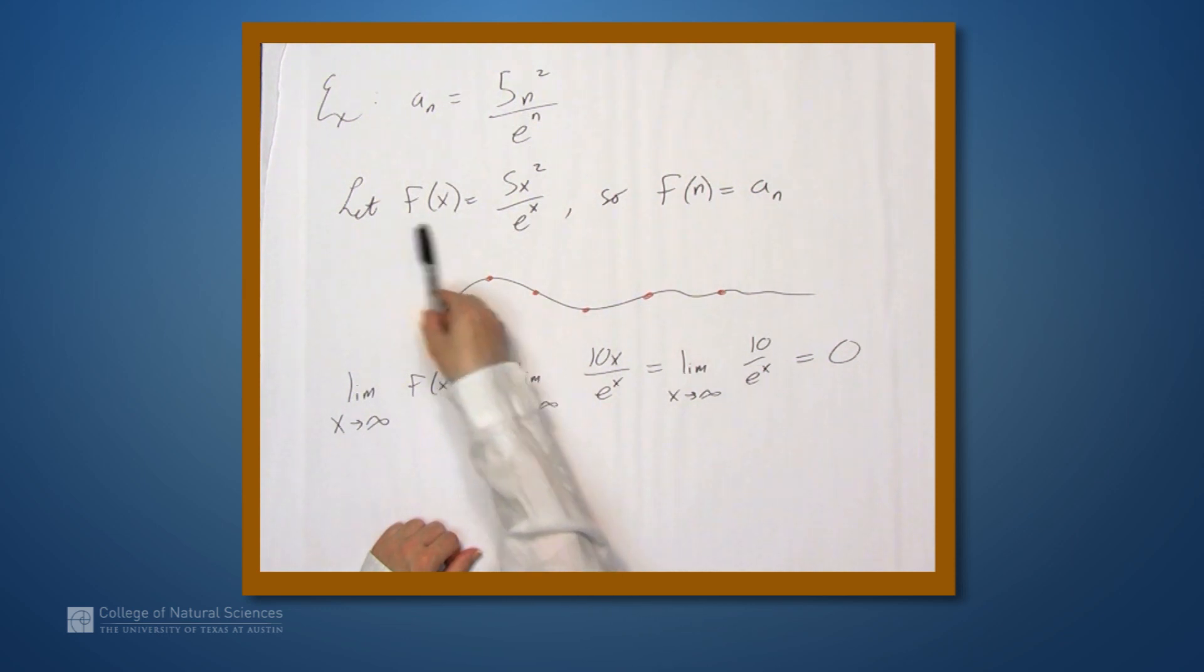So, since the limit of this thing exists and is zero, we can conclude that the limit as n approaches infinity of a sub n also equals zero.